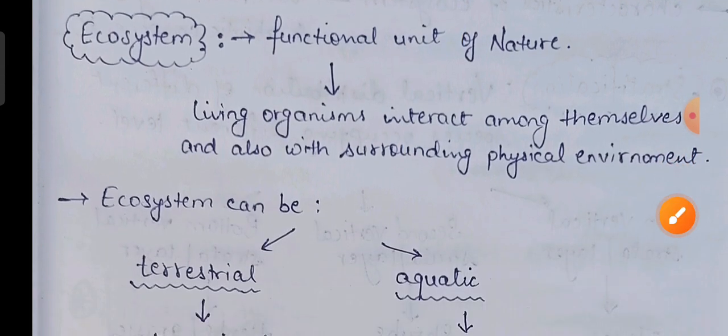Ecosystem ke andar jo living organisms hain, woh aapas mein kis tarike se interact karte hain, ye bhi include hai. Aur iske saath saath woh living organisms apne surrounding physical environment — yani ki soil, water, temperature, air — in sari chizon ke saath kis tarike se interact karte hain.